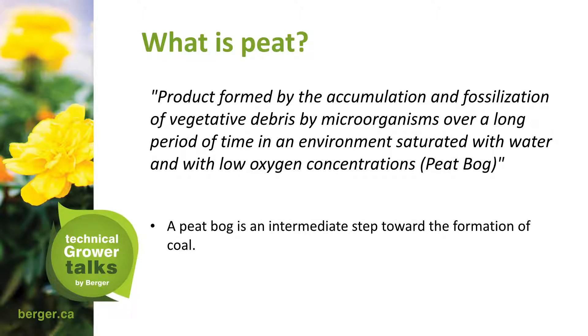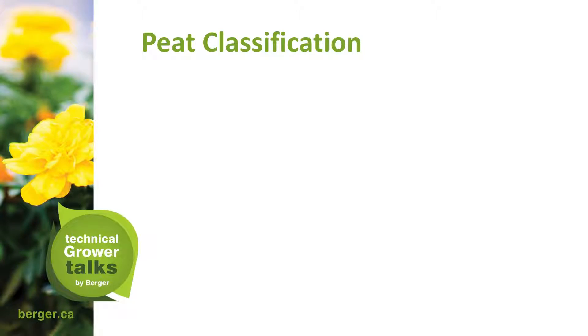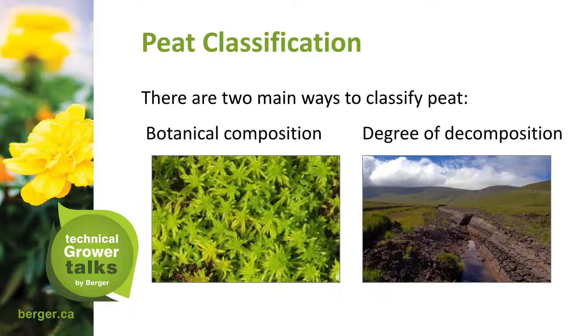A peat bog is an intermediate step towards the formation of coal — a process that takes a few millennia. As added information, peat classification involves two main aspects: botanical composition and degree of decomposition.